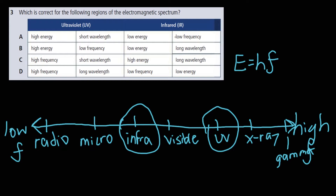On the other side, infrared has low energy and low frequency compared to UV. Its frequency is lower, and based on E = hf its energy is also lower. So the answer is A.